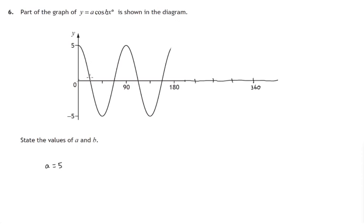And we notice we've got one cycle from 0 up to 90, another cycle from 90 up to 180. We'll have a third cycle from 180 up to 270 and we'll have a fourth cycle from 270 up to 360. So one, two, three, four cycles between 0 and 360. The value of b is 4.